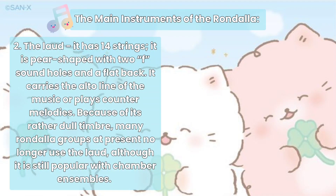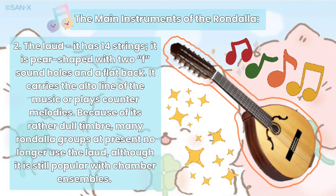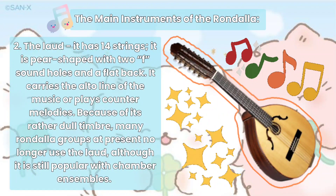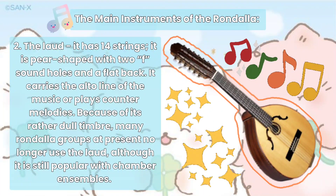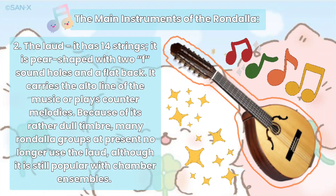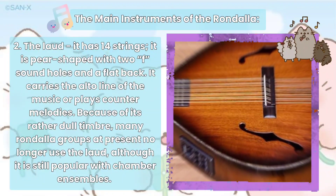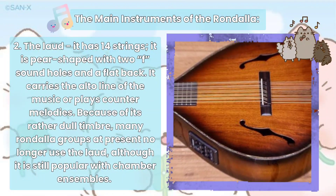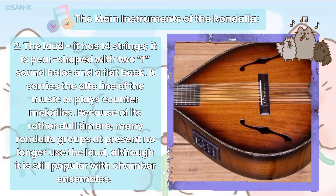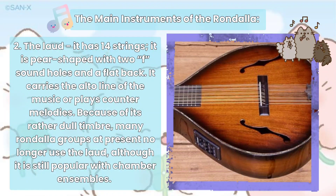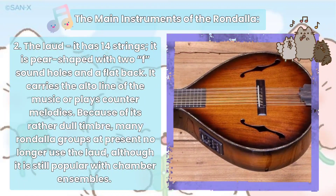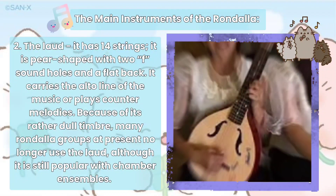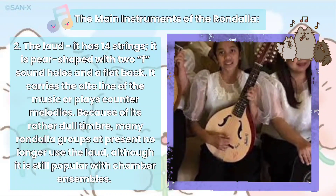The second one is the Laud. It has 14 strings. It is pear-shaped with two F sound holes and a flat back. It carries the alto line of the music or plays counter melodies. Because of its rather dull timbre, many Rondalia groups at present no longer use the Laud, although it is still popular with chamber ensembles.